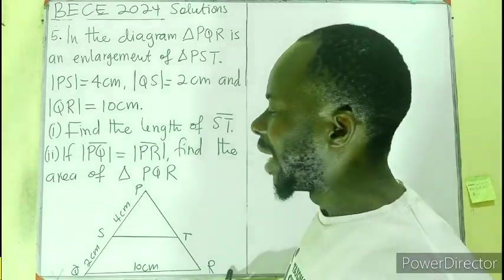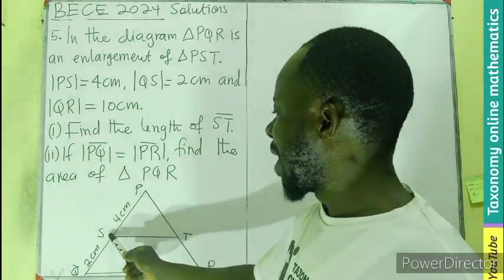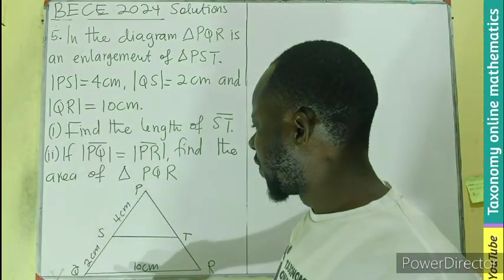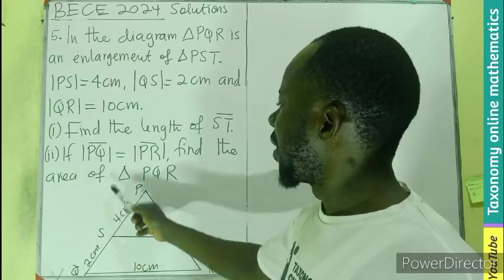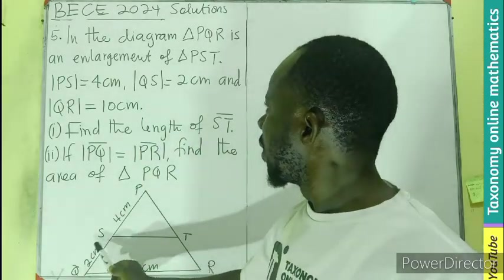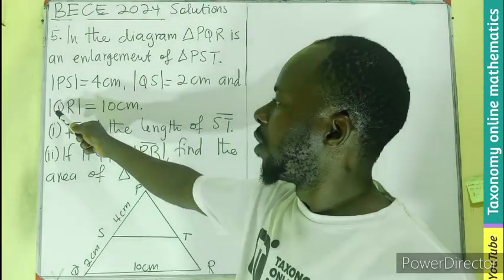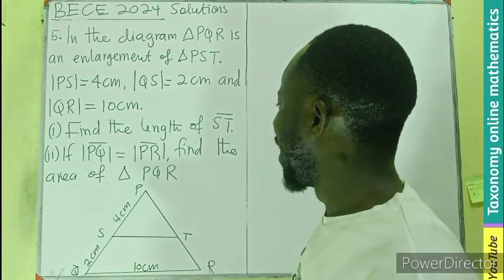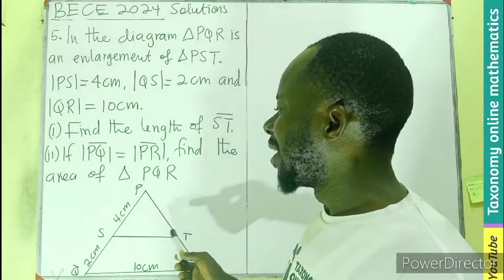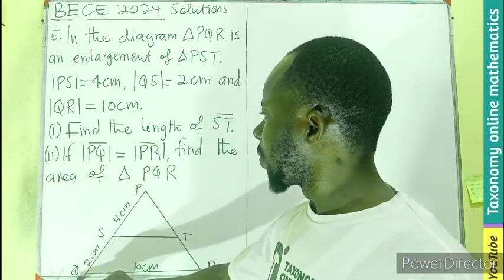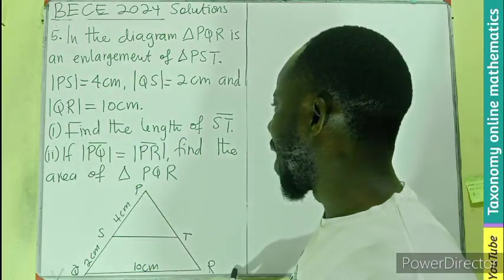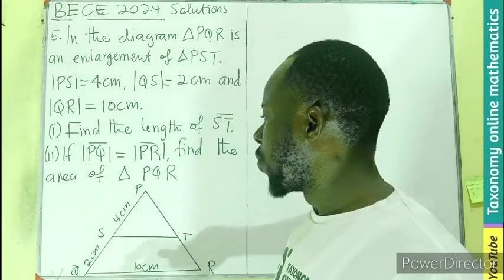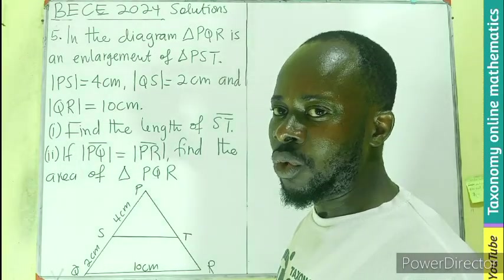PQR is an enlargement of PST. The length of PS is 4 cm, QS is 2 cm, and QR is 10 cm. We have to find the length of ST. If the length of PQ is equal to PR, we have to find the area of triangle PQR. This is BECE 2024.